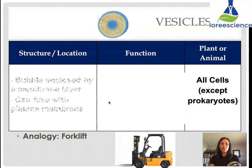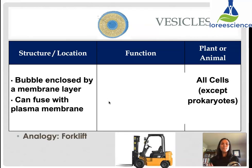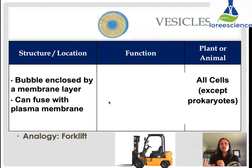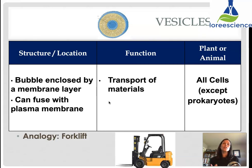Vesicles, as we've mentioned, are basically bubble-shaped structures — a cell membrane forming a bubble with a space inside. These vesicles can fuse or join with plasma membranes or any membrane within the cell. The vesicles can contain something, take it somewhere else, and then dump its contents into another organelle. Their function is to transport materials both within the cell, and also to bring materials into the cell or eject them from the cell. All cells except prokaryotes have vesicles. The analogy would be a forklift, because it moves things around the workspace.